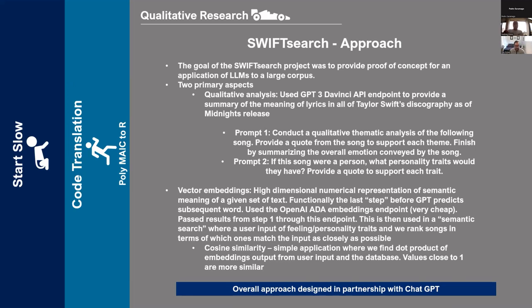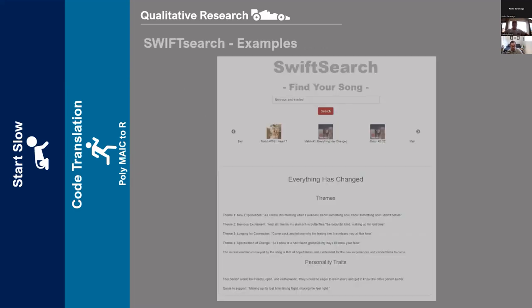The Taylor Swift search: the goal was to provide a proof of concept for LLMs applied to a large corpus. I used the GPT-3 API endpoint — this was back before GPT-3.5 and 4 — summarizing the meaning of all the lyrics in Taylor Swift's discography as of the Midnights release. Done in two prompts: first, conduct a qualitative thematic analysis of the following song, provide a quote to support each theme, and summarize the overall emotion conveyed. Second, if the song were a person, who would it be? Then I took those outputs and used vector embeddings — turning each result into a numeric representation of its semantic meaning — and used cosine similarity to find songs that most closely match an emotion you pass in.